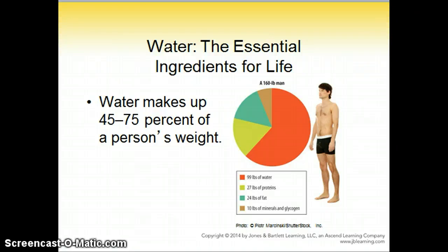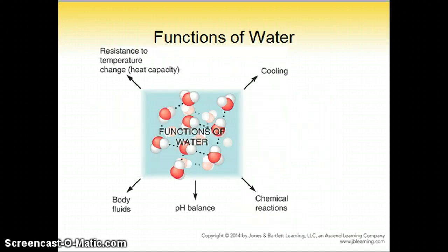Lean people with more muscle have a higher water percentage because muscle is about three-fourths water. Adipose tissue is about 10 percent water, and thus a bodybuilder would need more water intake than somebody that's obese. Water has many functions in the body. As far as heat capacity, it takes a lot of heat to change the temperature of the body, helping with extremes of environmental temperatures. It helps cool the body — a cold drink of water on a hot day does cool a person down — and it also involves many chemical reactions for our metabolism.